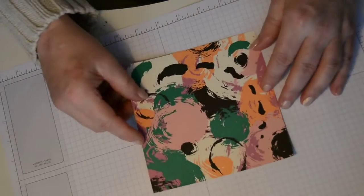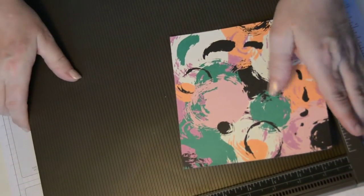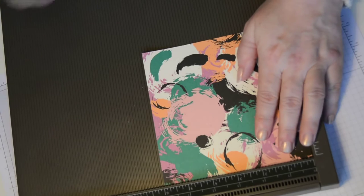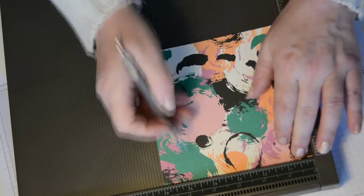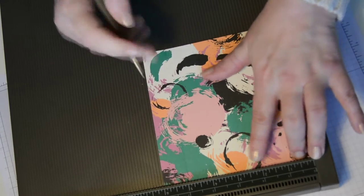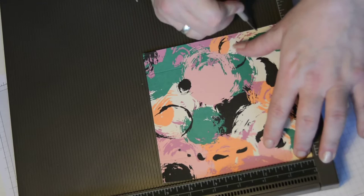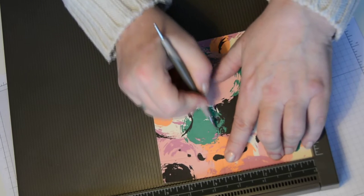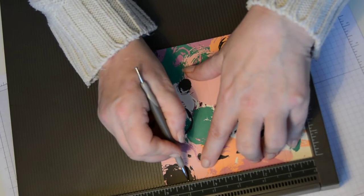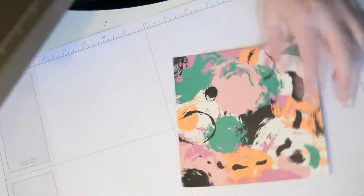Taking a piece of 6 by 6 inch designer series paper and your scoring tool, you're going to score at 1 inch and 5 inch, then you're going to turn it round and score at 1 inch, 2 and a half, 3 and a half inches, and 5. Popping that aside.